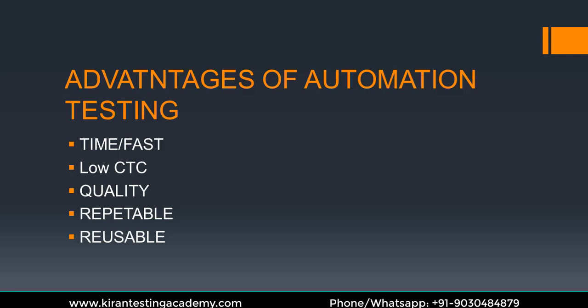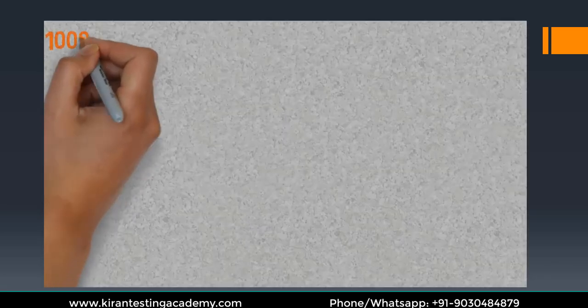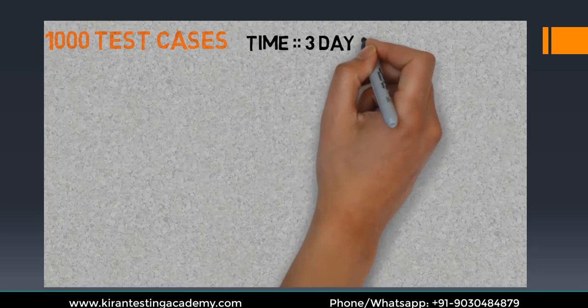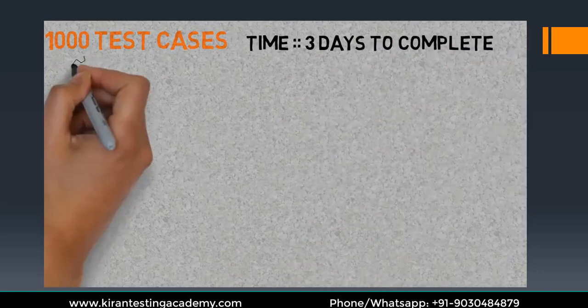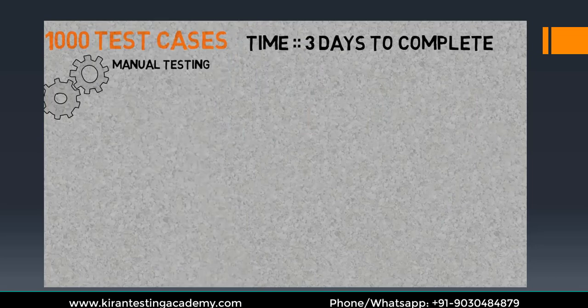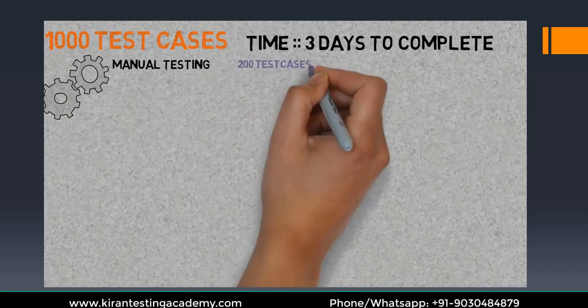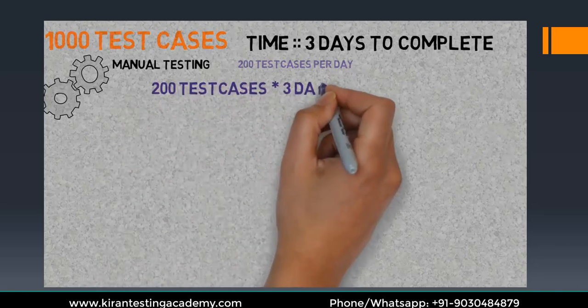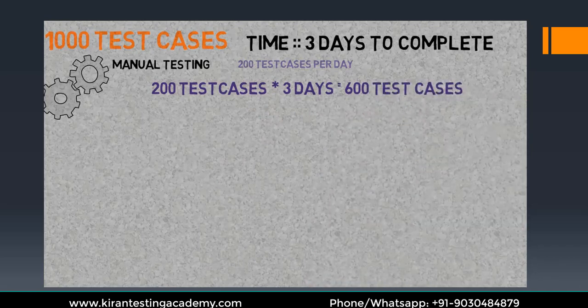There are a few other excellent advantages of automation testing. Assume that I want to execute 1000 test cases — I'm talking about execution only, not writing test cases or scripts. I have 1000 test cases and 3 days to execute them all manually. The maximum I can execute is 200 test cases per day. In 3 days, that's 600 test cases. What about the remaining 400?